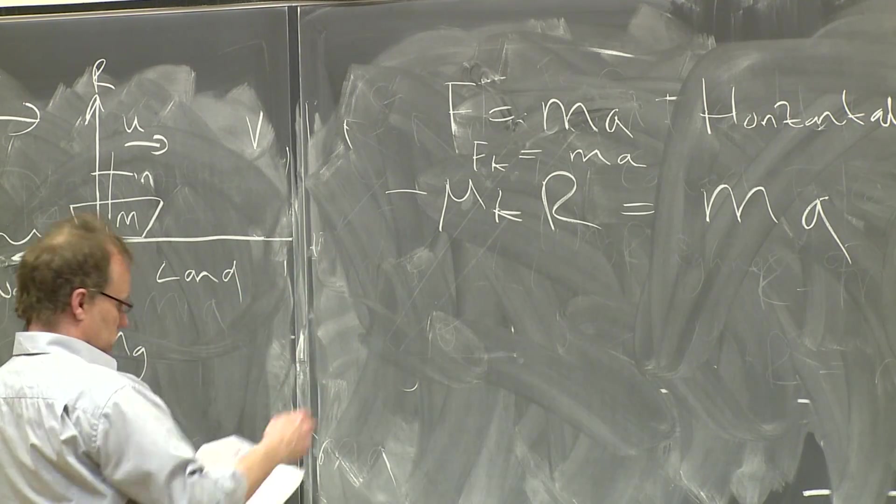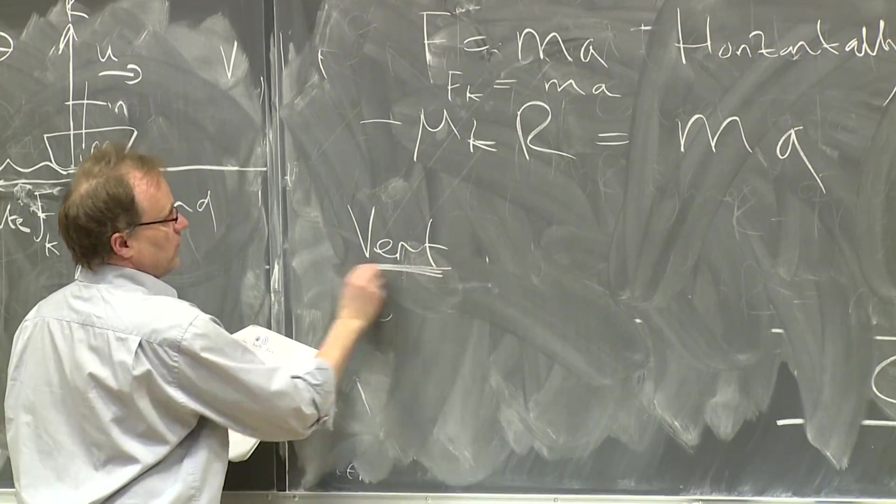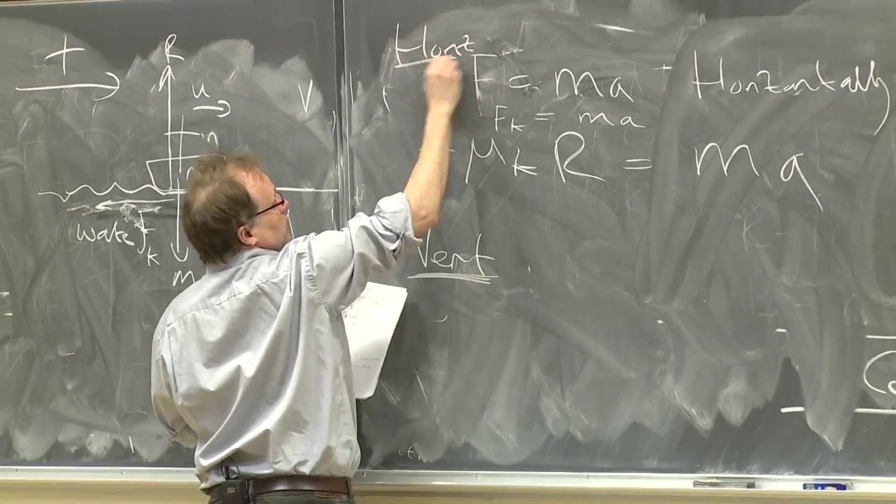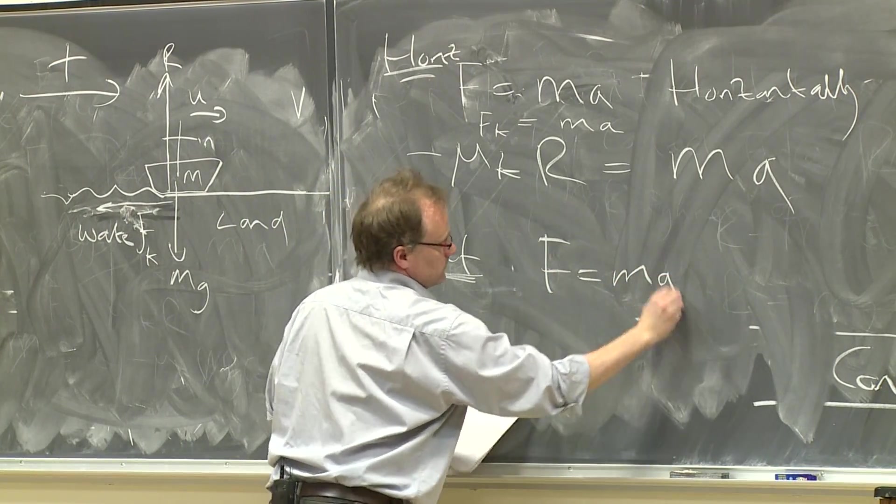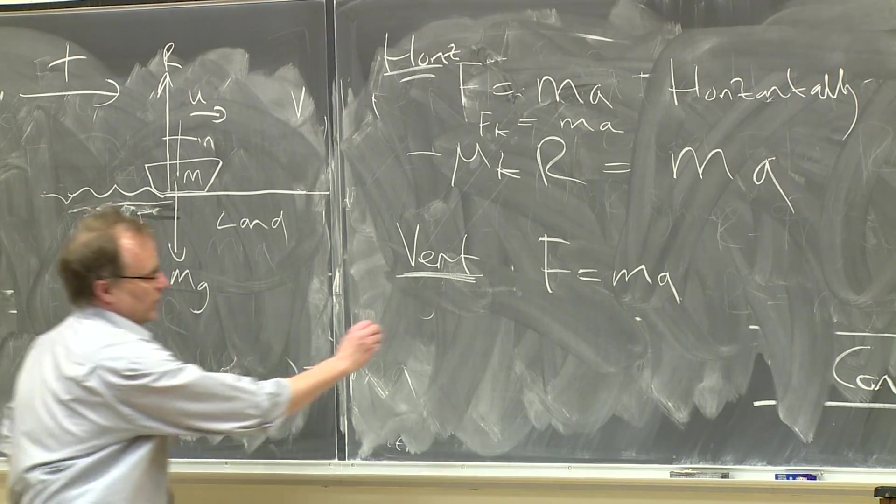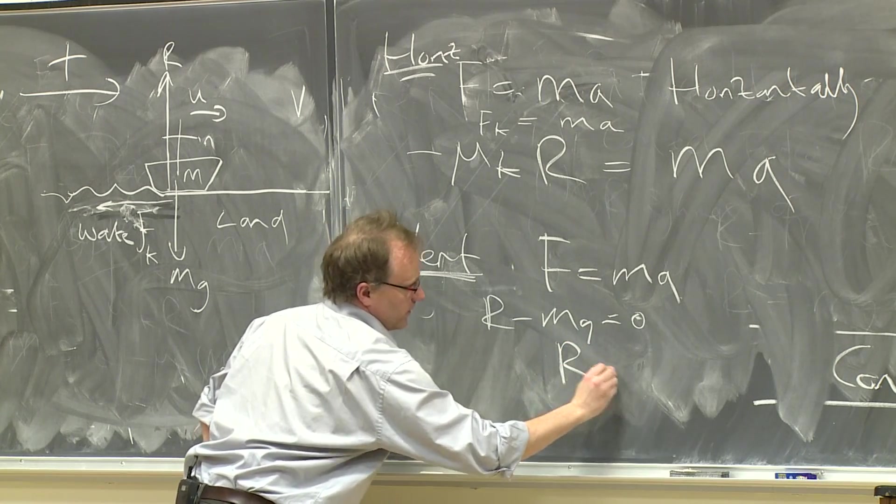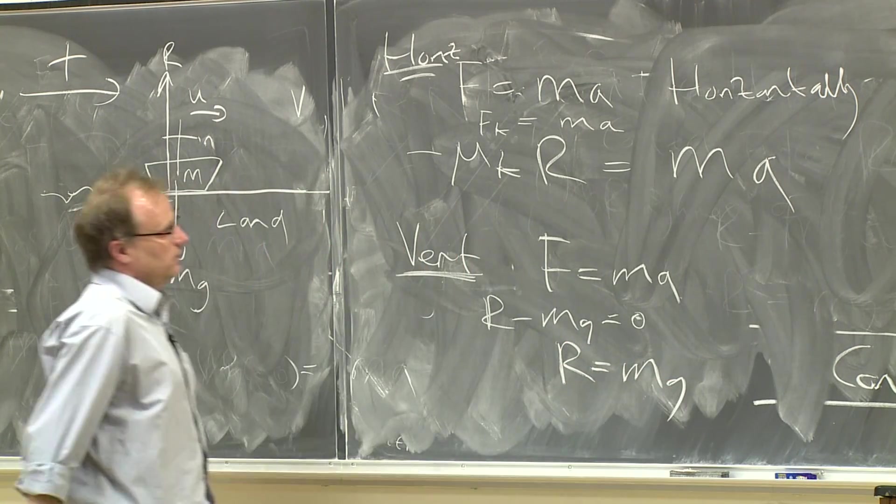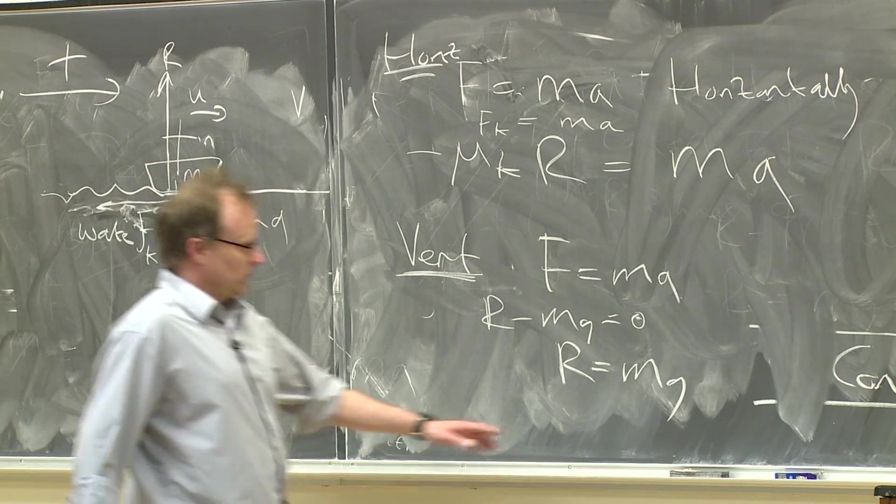So this would be horizontally. Vertically we have F equals ma, and the only vertical forces are R and mg, so we have R minus mg equals zero, so we have R equals mg. Everything clear there?